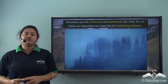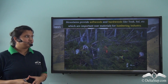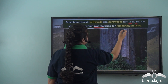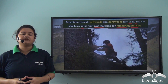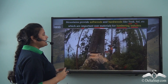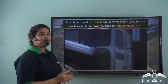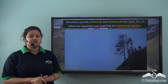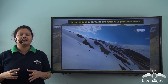Mountains provide timber and fuelwood for forest-based industries. Softwoods and hardwoods like teak and sal are important raw materials for lumbering or timber-based industries. There are various steps involved in lumbering: trees are first identified, then cut down, and logs of wood are transported to industries or sawmills to obtain the finished product. Thus, the lumbering industry is quite developed in mountainous regions where dense forests exist.